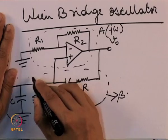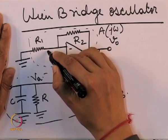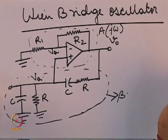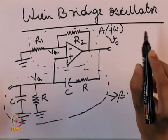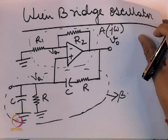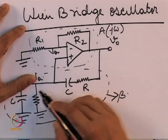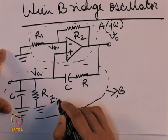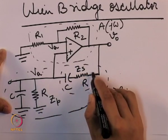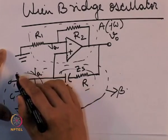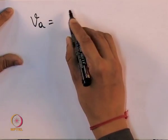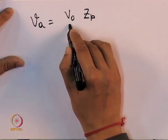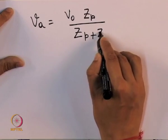Suppose the voltage at this point is Va. Due to the virtual short effect, the voltage at the other input will also be Va. If I try to express Va in terms of V0, Va is obtained from V0 by simple voltage division, because no current is flowing into the op amp. If I call this part of the circuit Zp and the other part Zs, then Va = V0 · Zp / (Zp + Zs).